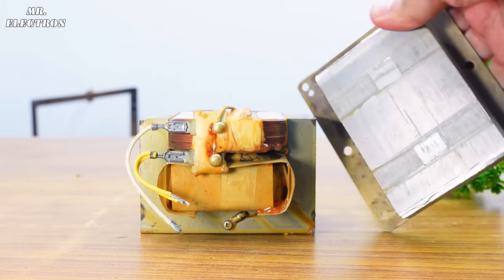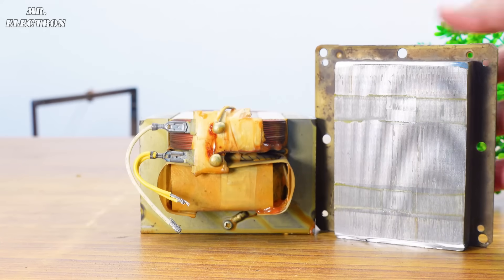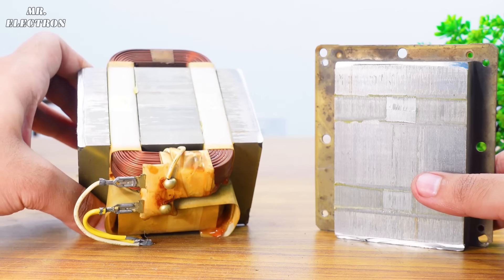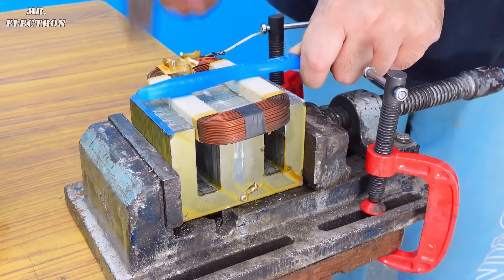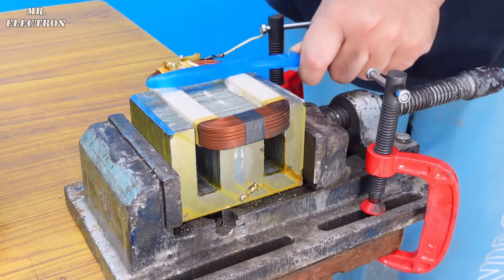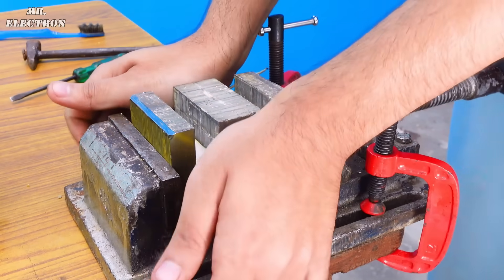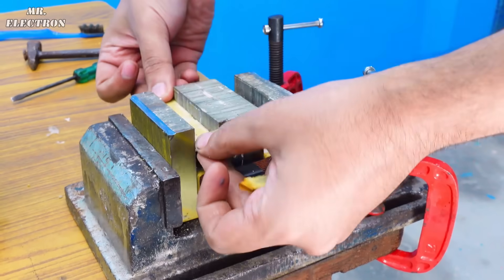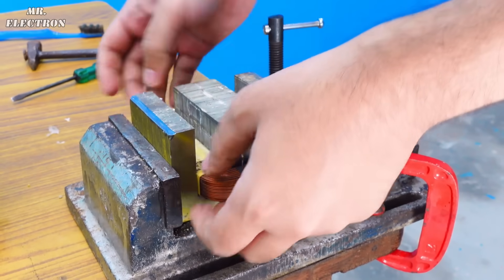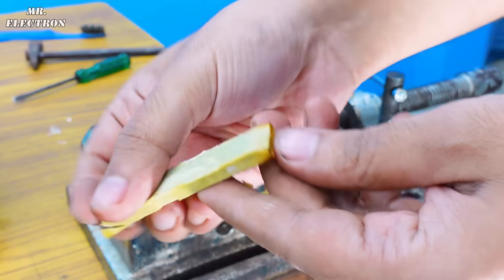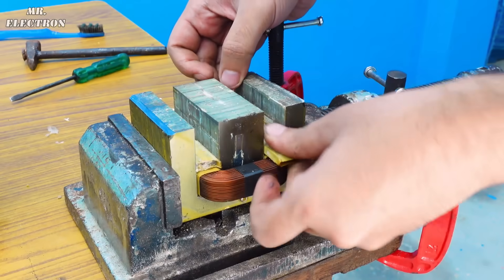After cutting off the core we can have a closer look on the new primary. It is new and shiny. Here you can see I'm using this toothbrush to hammer this winding safely and move it to the bottom. Here is some additional core that comes pre-installed with the transformer, so I'm placing it back as it was before.